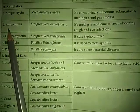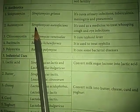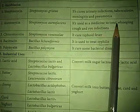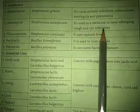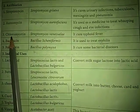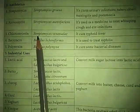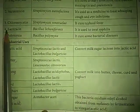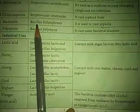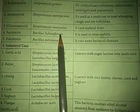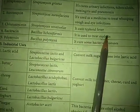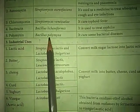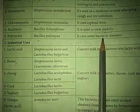Second antibiotic — aureomycin, produced by Streptomyces aureofaciens. It is used as a medicine to treat whooping cough and eye infections. Third — chloromycin, produced by Streptomyces venezuelae. It cures typhoid fever. Fourth — bacitracin, produced by Bacillus licheniformis. It is useful to treat syphilis. Fifth — polymyxin, produced by Bacillus polymyxa. It cures some bacterial diseases.